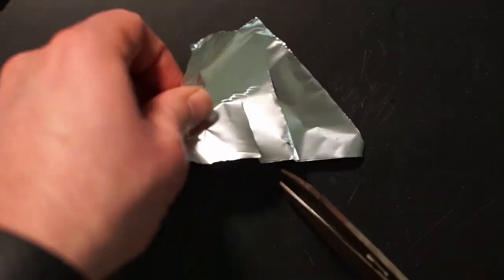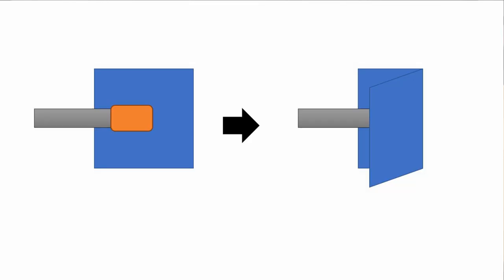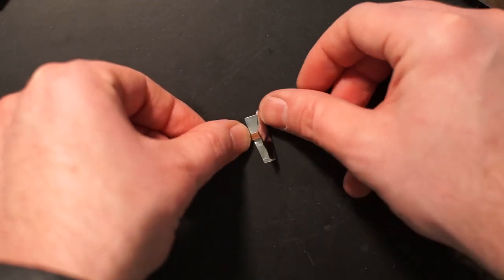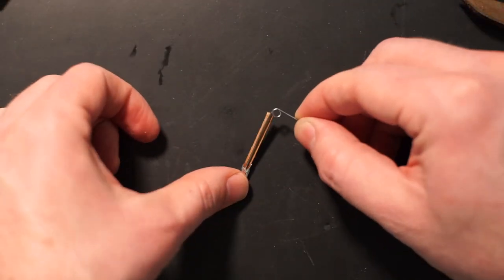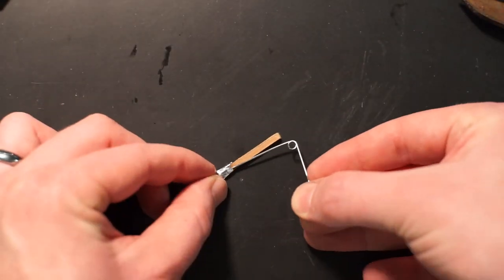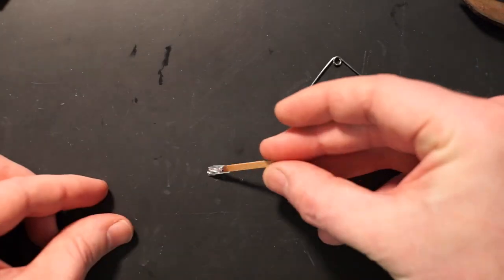Take your match and a little square of aluminum foil. Wrap the aluminum foil around the match head squeezing securely and then insert your pin along the sides of the match to open up a little vent hole.